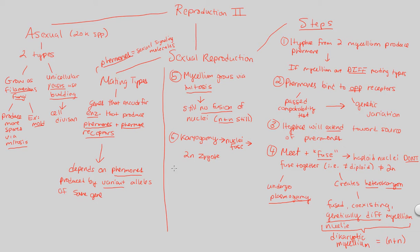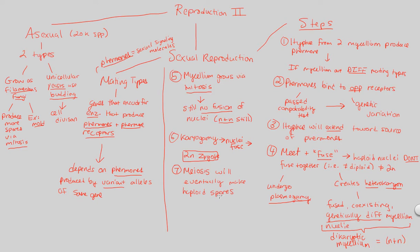All the way in step six, and then finally in step seven we have meiosis. Meiosis is to 'make smaller.' So we're going to take this 2N zygote, which has taken a long time to get to — the genetically combined nuclei of two different fungi — and meiosis will eventually take this 2N zygote and make haploid spores. This means they are sexually produced, because they are undergoing meiosis.